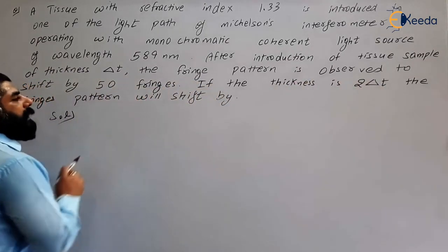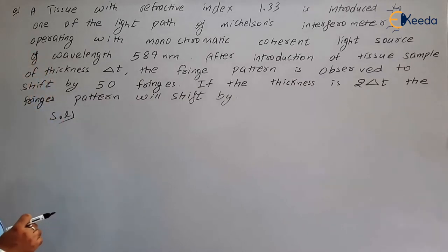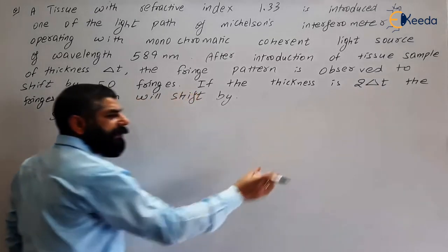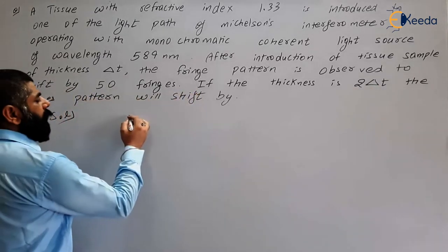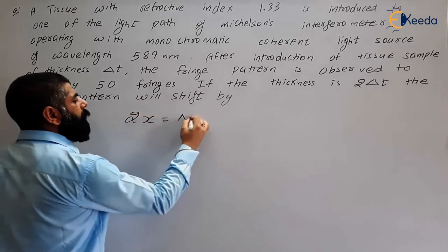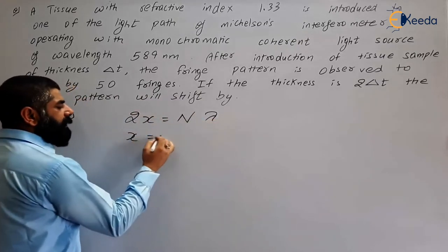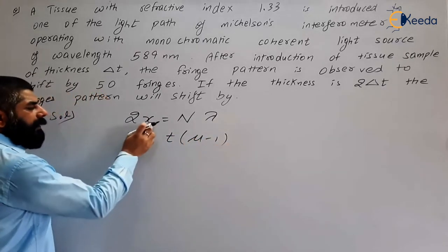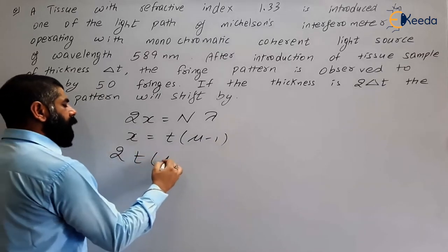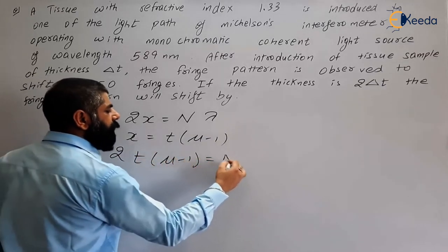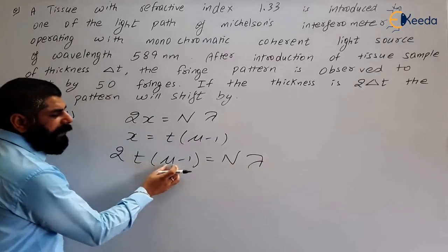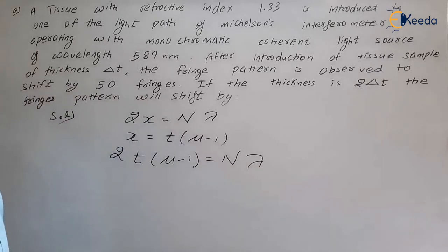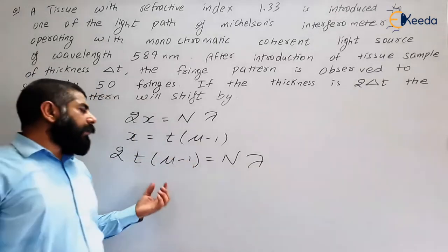We need to find the relation between thickness t and number of fringes N. We know that 2x = nλ, and also x = t(μ - 1). Substituting, we get 2t(μ - 1) = nλ, where t is the thickness, μ is the refractive index, n is the number of fringes, and λ is the wavelength of the monochromatic light.